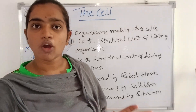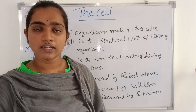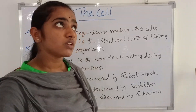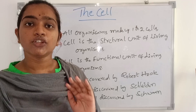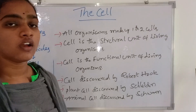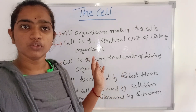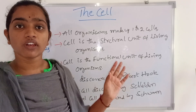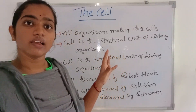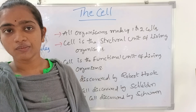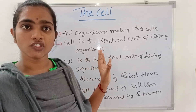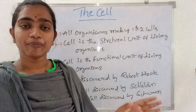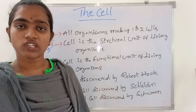This cell was discovered by Robert Hooke. The cell is called the functional and structural unit of all living organisms. Every single living organism depends on the cells of the body. The cell is the structural unit of all living organisms, and the cell is the functional unit of living organisms.